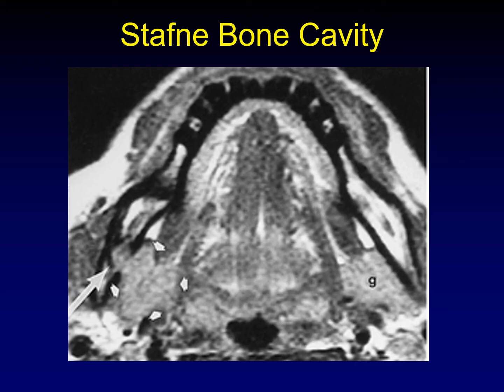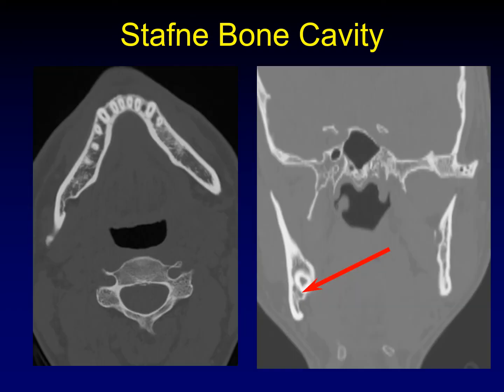This is supported by the finding that other salivary glands can produce similar defects. Another important radiologic element in the diagnosis is the relationship to the inferior alveolar canal. You can see that this Stafne bone cavity — again, well-circumscribed cortical bone around the outside filled with fat — is inferior to the inferior alveolar canal. That is a reliable relationship and important to establishing the diagnosis.